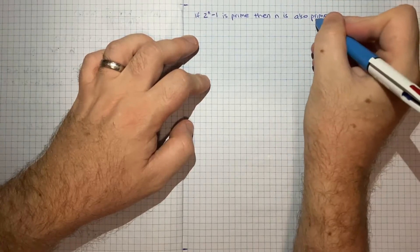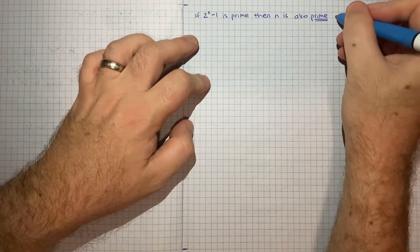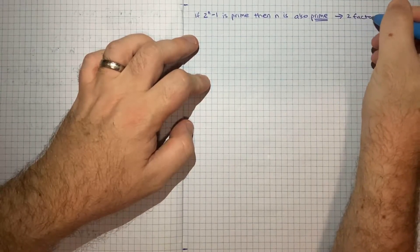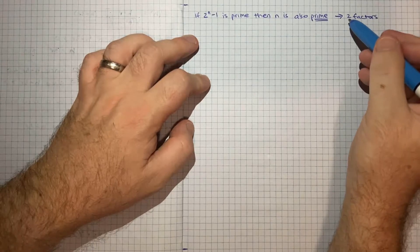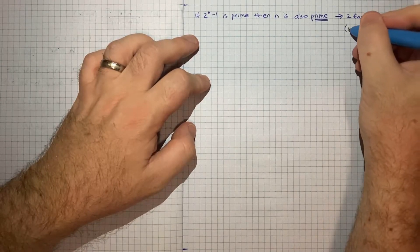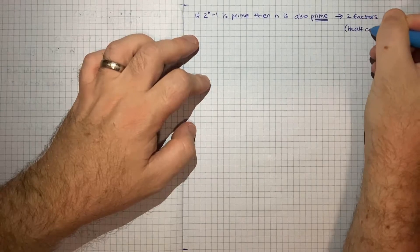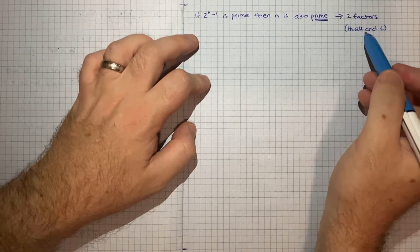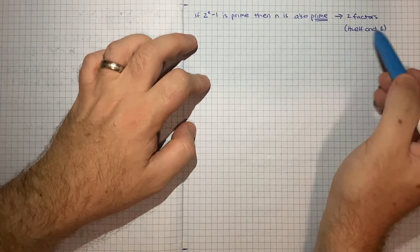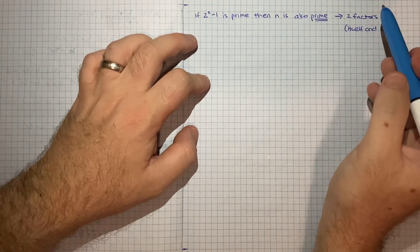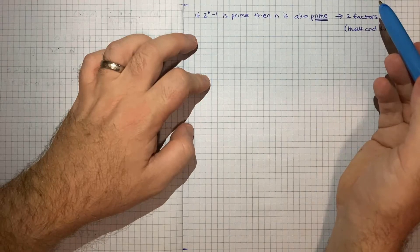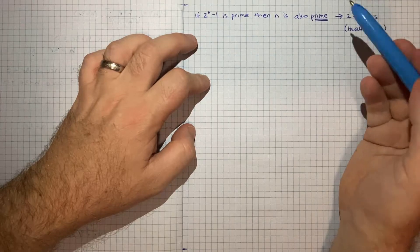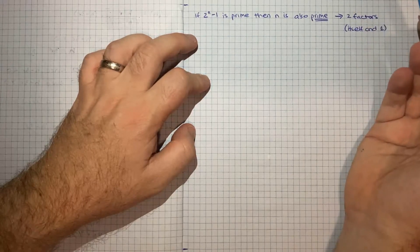Basically a prime number only has 2 factors — the only numbers that can divide into it are itself and 1. So there are no other factors other than the number itself and 1. For example, 3 is a prime number because apart from 3 and 1, there's no other integer that can divide into 3.